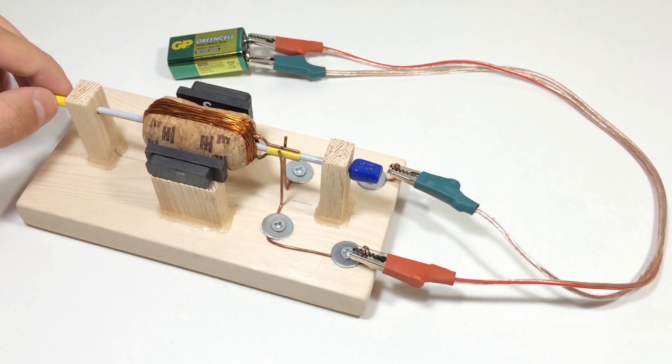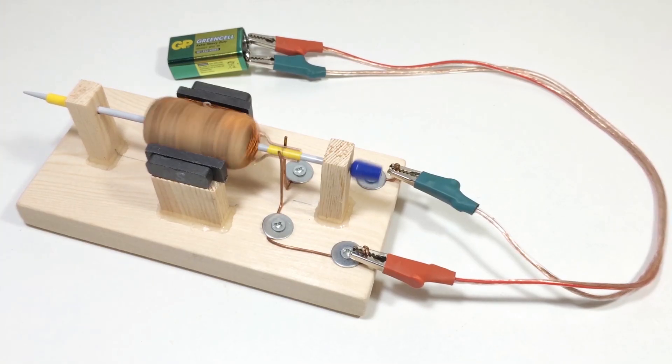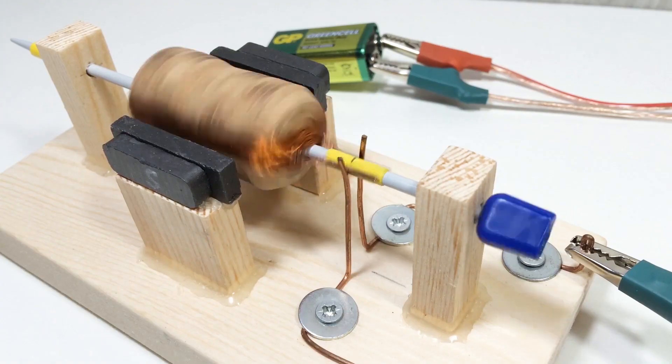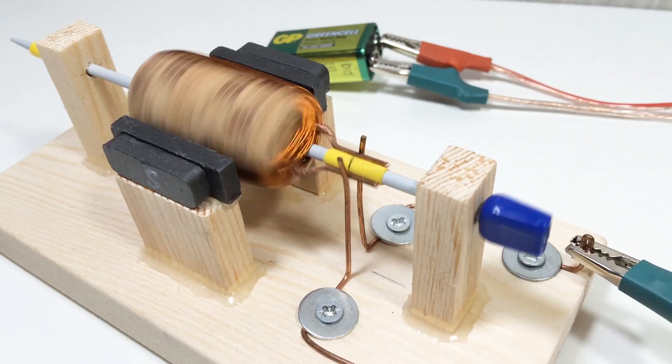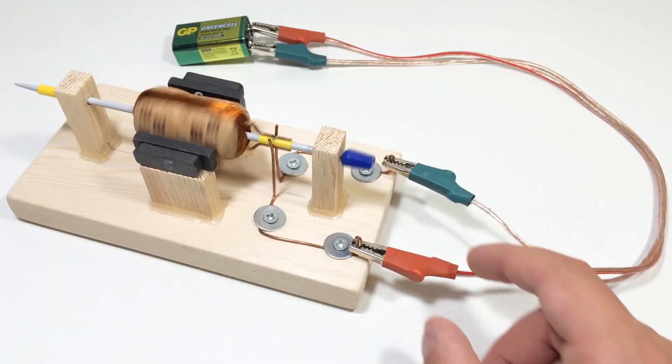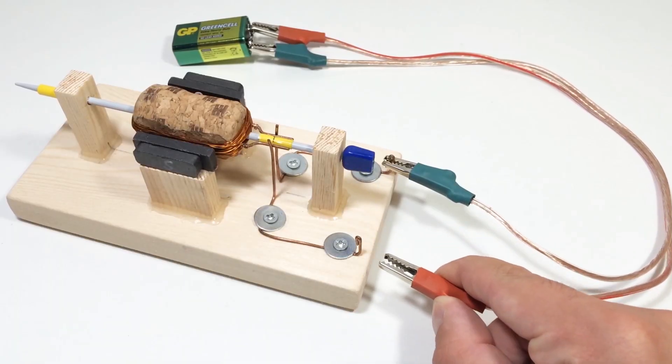So how does it work? When electric current flows through the coil, it becomes an electromagnet. The magnetic field interacts with the permanent magnets below, creating torque. That's the force that makes it spin. And the more turns your coil has, the stronger the effect. Pretty cool, right?